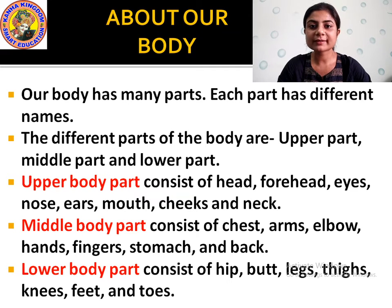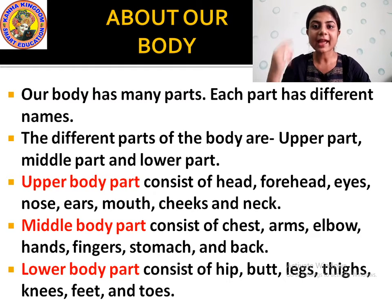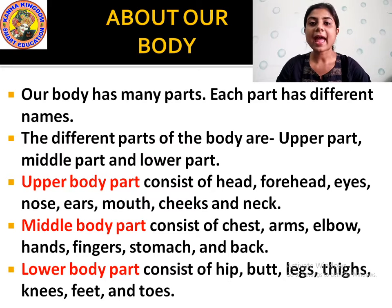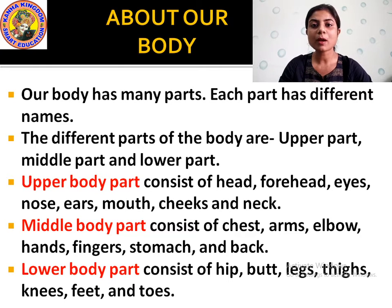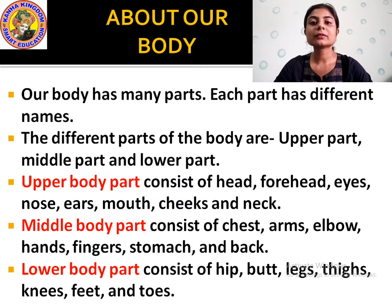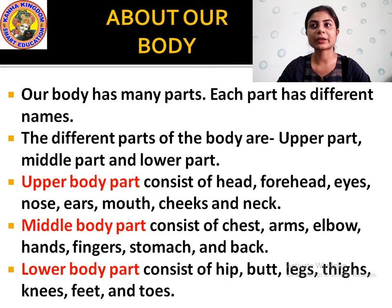Our body is divided into three parts. The upper part is the head portion. The middle part goes from the shoulder to the waist — where you tie up your pants. Then the lower part of the body is from the hip to the toe.